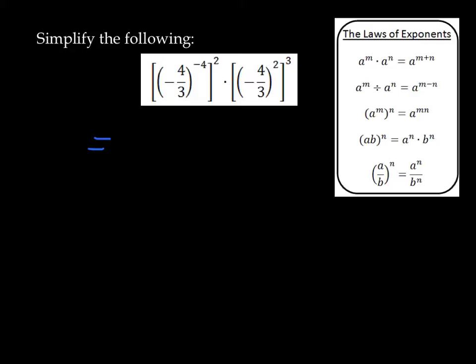In the first case here, I'm going to deal with this double exponent, this negative 4 to the power of 2. So negative 4 thirds to the power of negative 4 to the power of 2. This looks just like the third of our laws of exponents. And that tells me that I can rewrite that first power as negative 4 thirds to the power of negative 8.